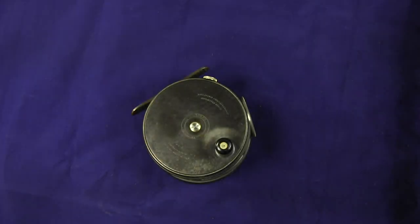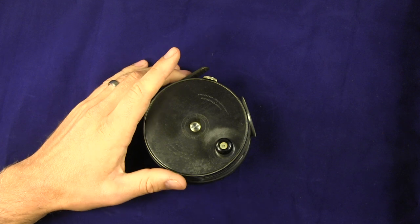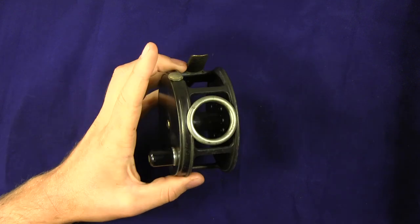Hey, how's it going? It's Kevin. I want to talk to a really nice reel today. This is a Hardy vintage Hardy Perfect. It's a four inch size with a line guard.